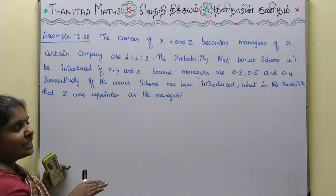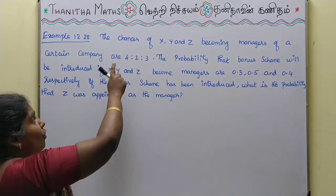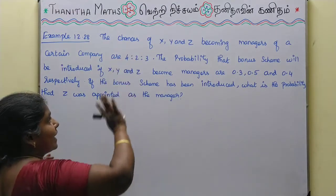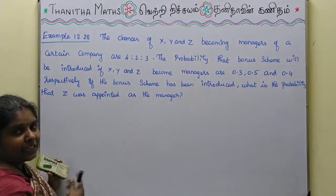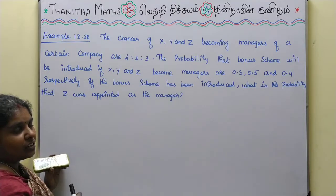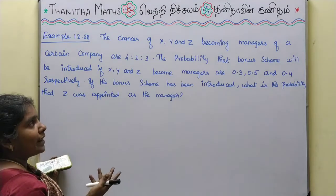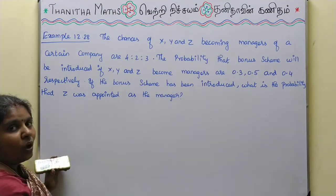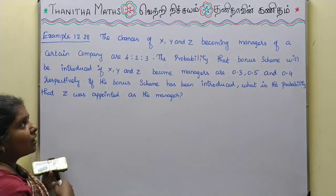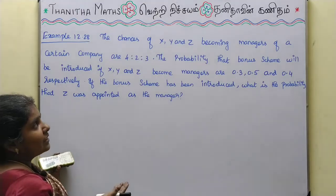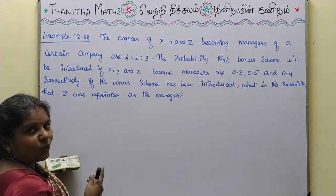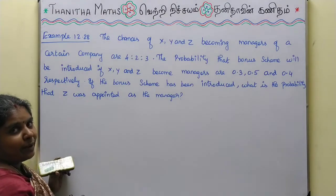In total there are 9 chances. So 4 by 9 chances are for X as manager, 2 by 9 chances are for Y as manager, and 3 by 9 chances are for Z as manager.